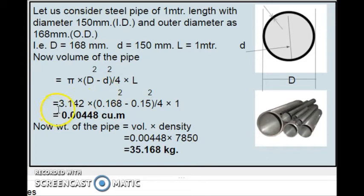That is equal to 3.142, this is pi, into what is the D? D is the outer diameter, that is 168 mm. That is what we have taken. 0.168 square minus ID, inner diameter is 0.15. That is 6 inch. Square divided by 4 into 1. 1 is the length of the pipe, that is 1 meter. We have calculating it for 1 meter.